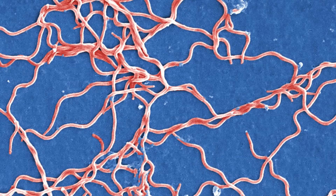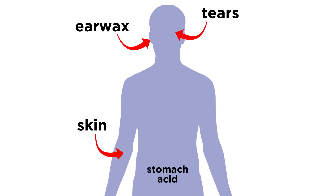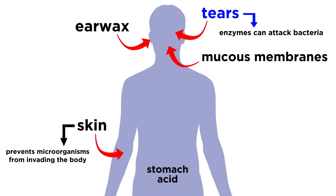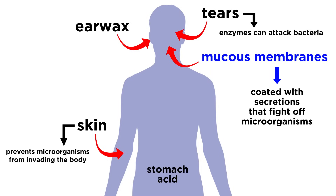Now that we have an idea of what bacteria are capable of, let's talk in more detail about how they're able to cause destruction. First, let's talk entry. Our bodies have natural defense mechanisms, such as skin, earwax, stomach acid, tears, and mucous membranes. Our skin prevents microorganisms from invading, our tears contain enzymes that attack bacteria, our airways filter out harmful particles, and our mucous membranes are coated with secretions that fight off microorganisms.